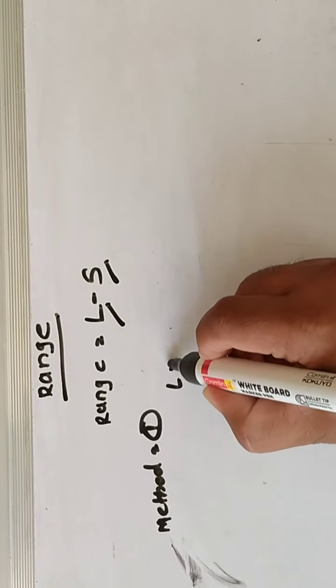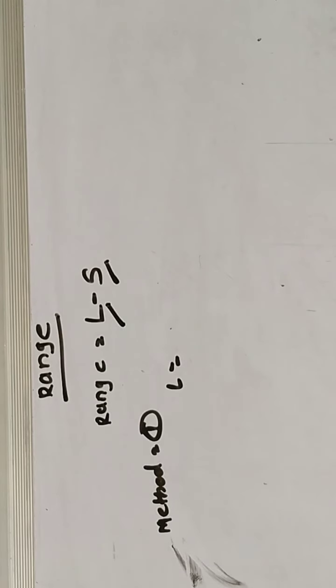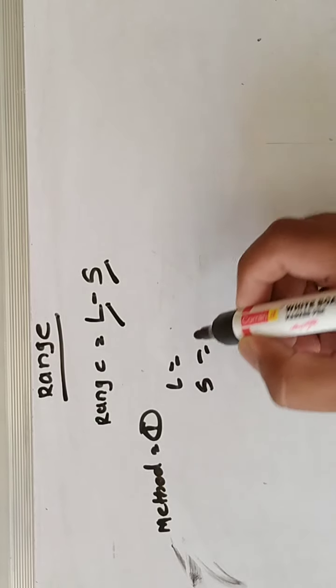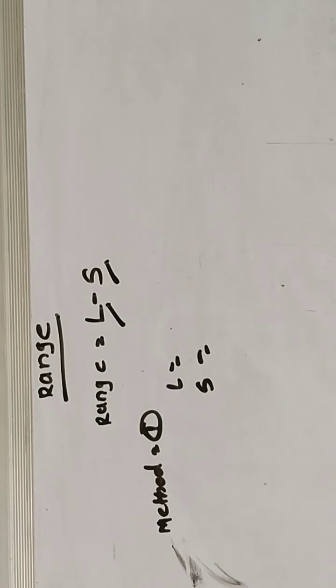L equals upper boundary of the higher class, and S means the lower boundary of the lower class. Method number second: